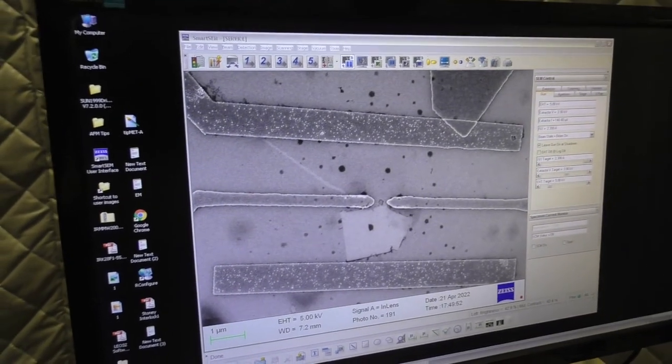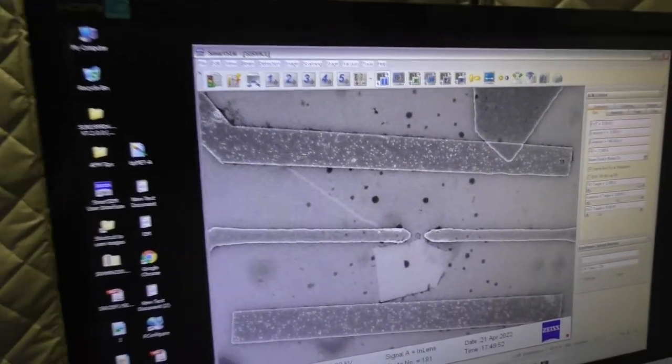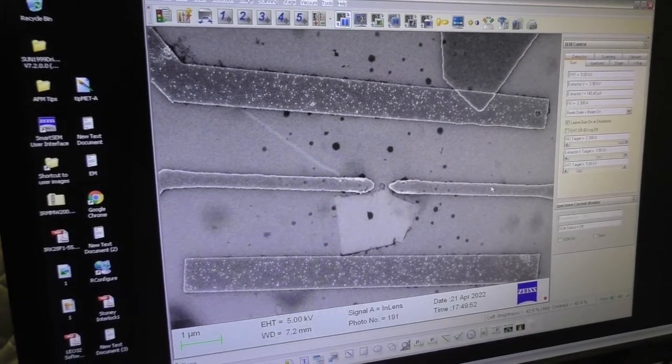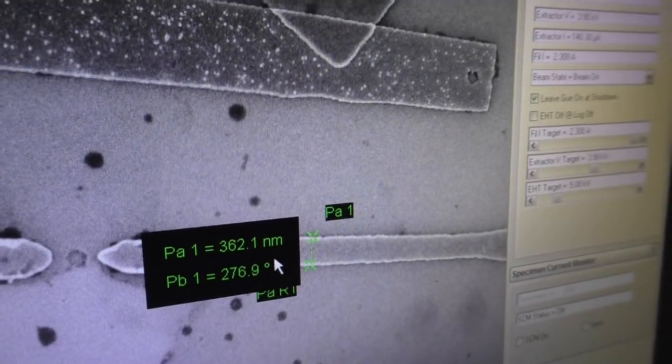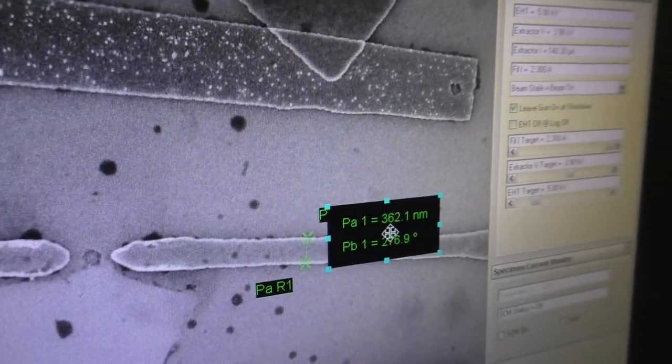The response of the detector assigns brightness at each point which constructs the image. A slow scan like this allows the signal to average, which creates a smoother and less noisy image.